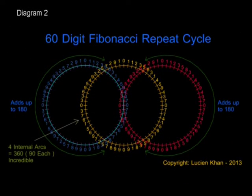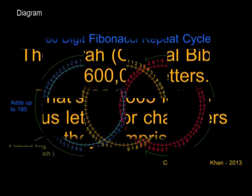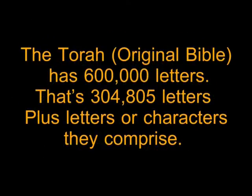It is said that the Torah, that's the original Bible, which is believed to be the direct word of God recorded exactly as it was given to man, consists of exactly 600,000 characters. That's 304,805 letters, plus the letters they comprise.